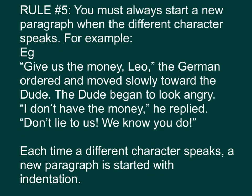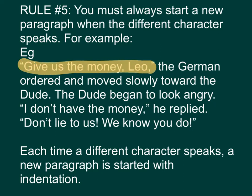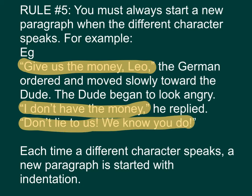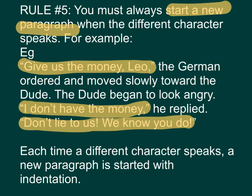Rule number five. You must always start a new paragraph when a different character speaks. For example, 'Give us the money.' The German ordered and moved slowly towards the duke. The duke began to look angry. 之后呢，这是第一个说话。但是呢，第二个说话呢，其实已经要开新一行。第三句的说话呢，都要开新一行。Each time a different character speaks, a new paragraph is started with indentation. 就是我们有时候中文都会可能有的，就是缩了下去两格那样，去开新一段。